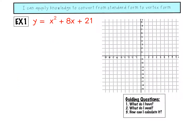Going from standard form to vertex form, we need to think about: what do I have, what do I need, and how can I calculate what I need? What do I have? I have a, b, and c — my quadratic term, linear term, and constant. What do I need? To put a function in vertex form, I need the a and I need the vertex. The good news is a is the same in both forms, so it's an understood 1. Now I need to calculate the vertex.